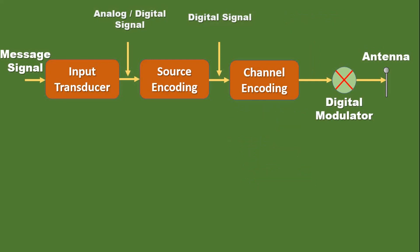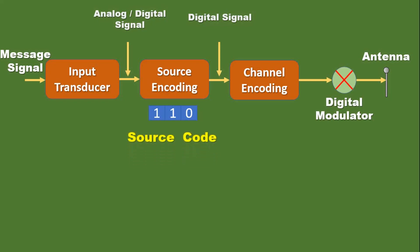Let's understand how source encoding and channel encoding techniques work. Suppose the output of the source encoder is 110 — this is a digital signal, and we can call it the source code. This is our message signal after reducing the excess bits by the source encoder. This data is fed to the channel encoder block. To avoid noise during transmission, the channel encoder introduces redundant bits and adds them to the message signal. The first three bits of the channel code are the redundant bits, so if an error occurs, it will not affect our message signal.